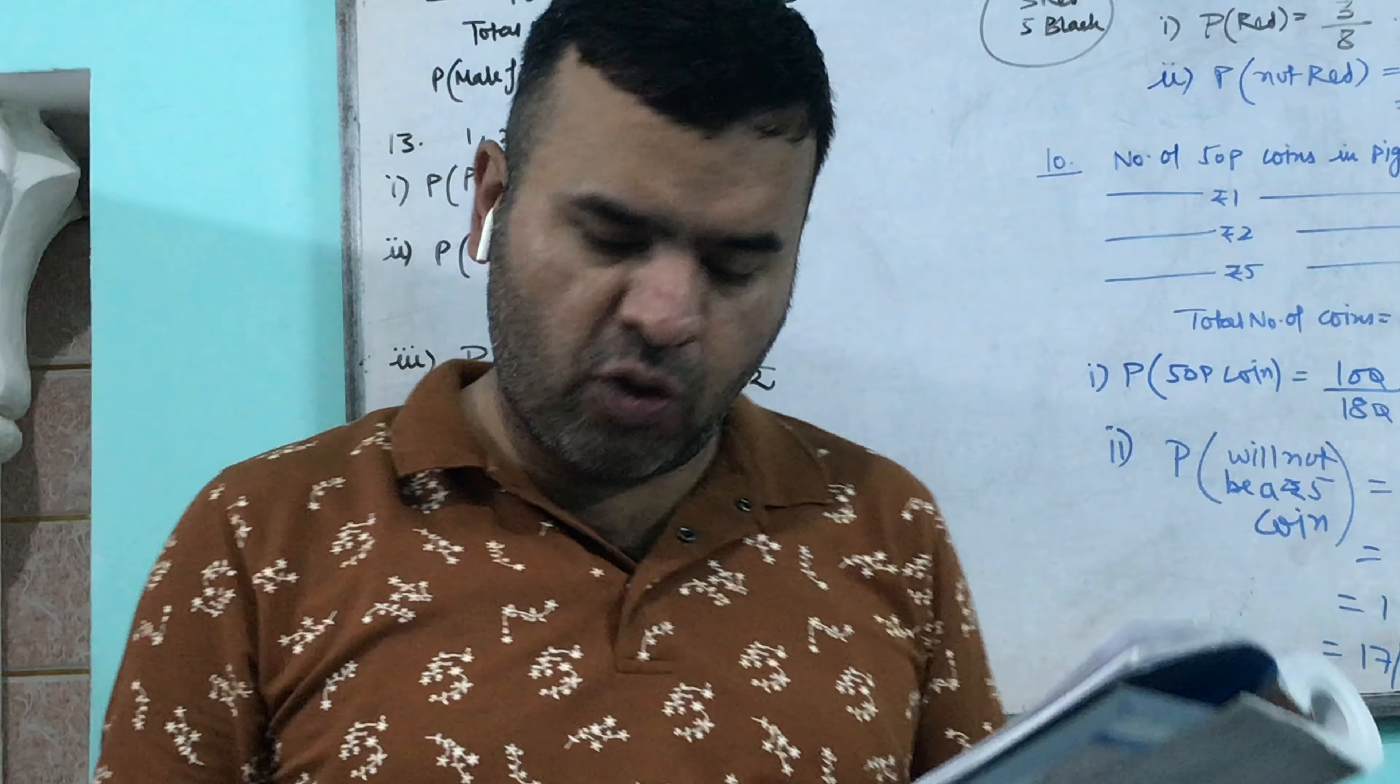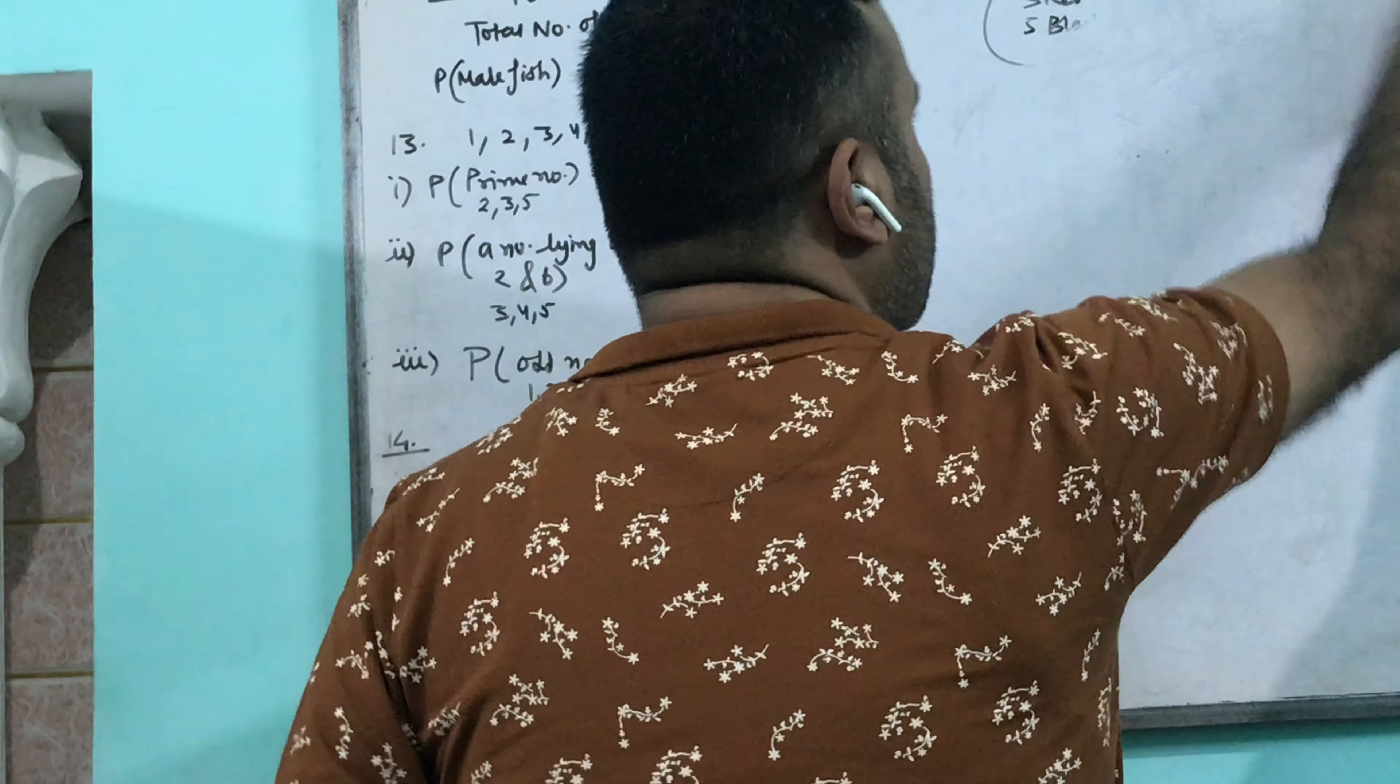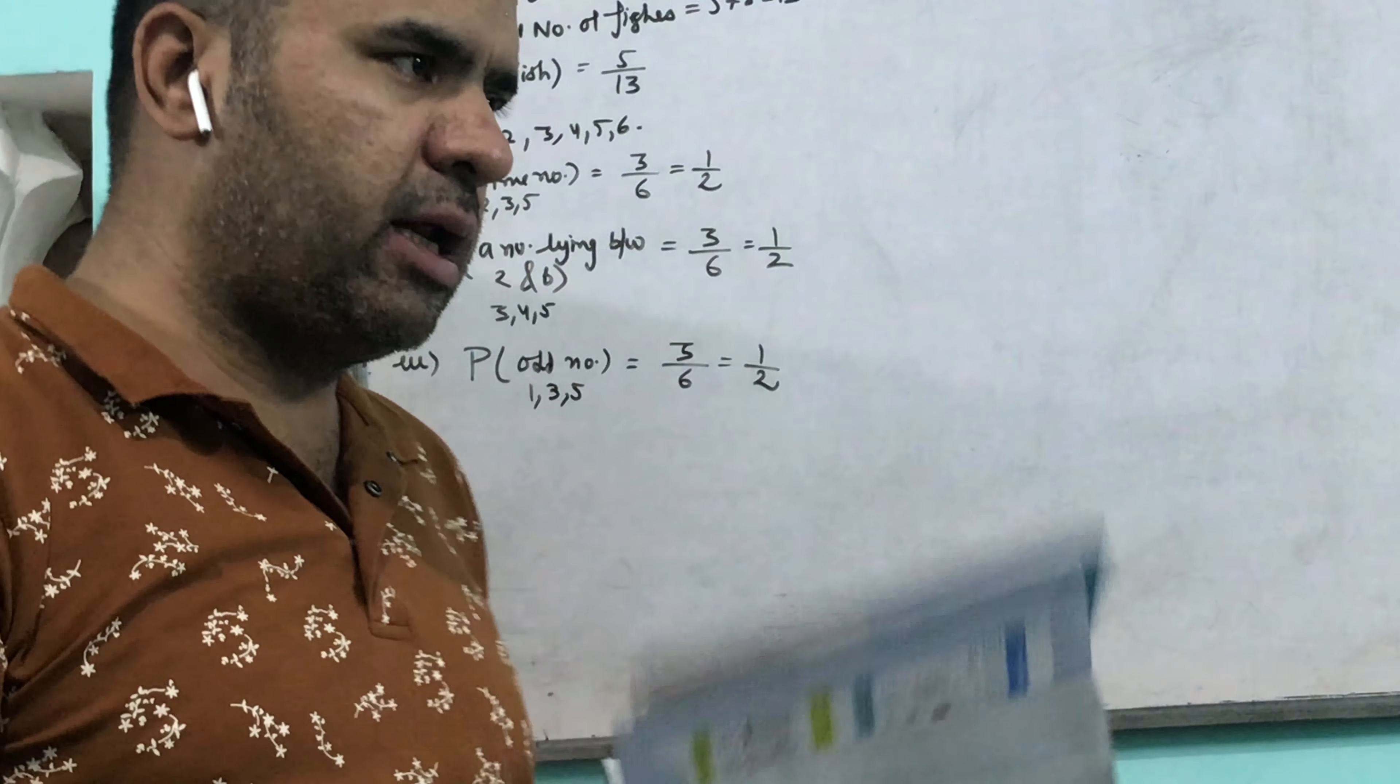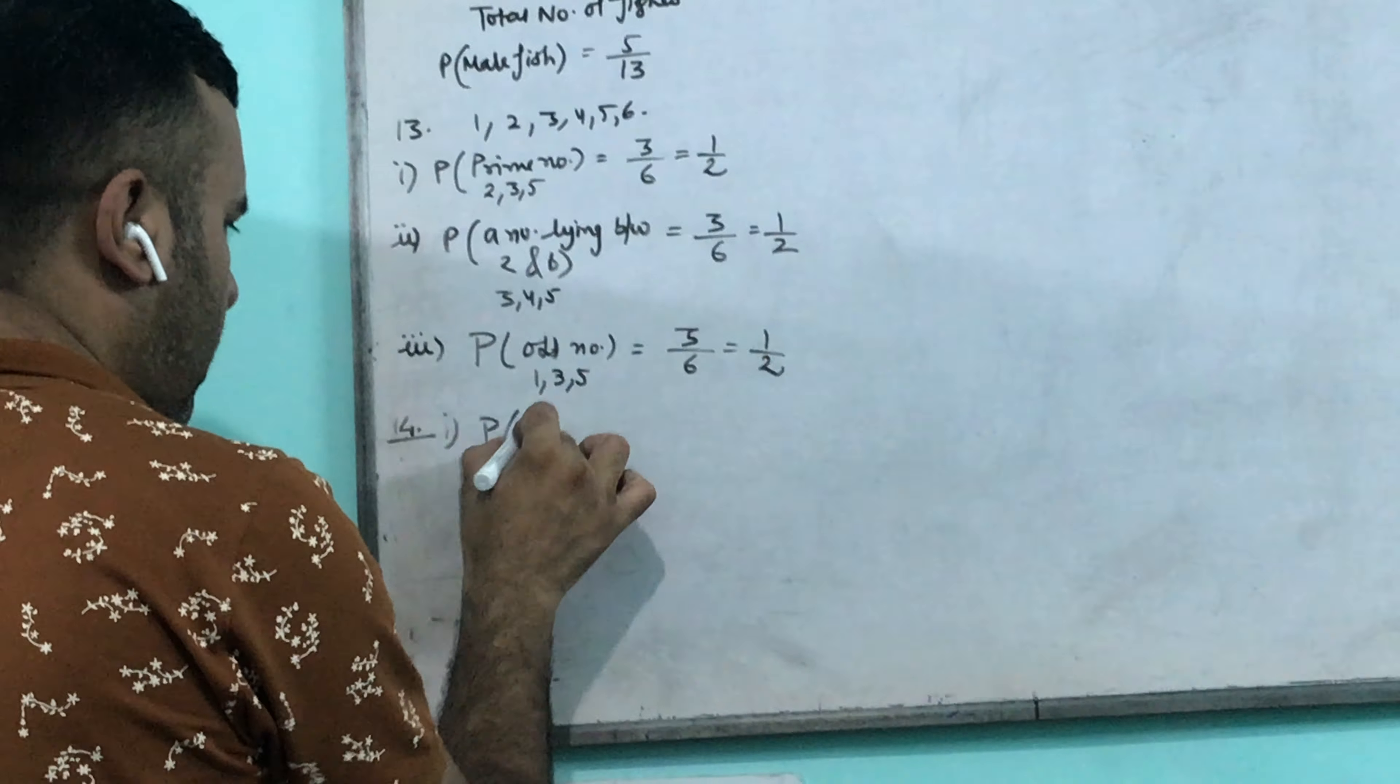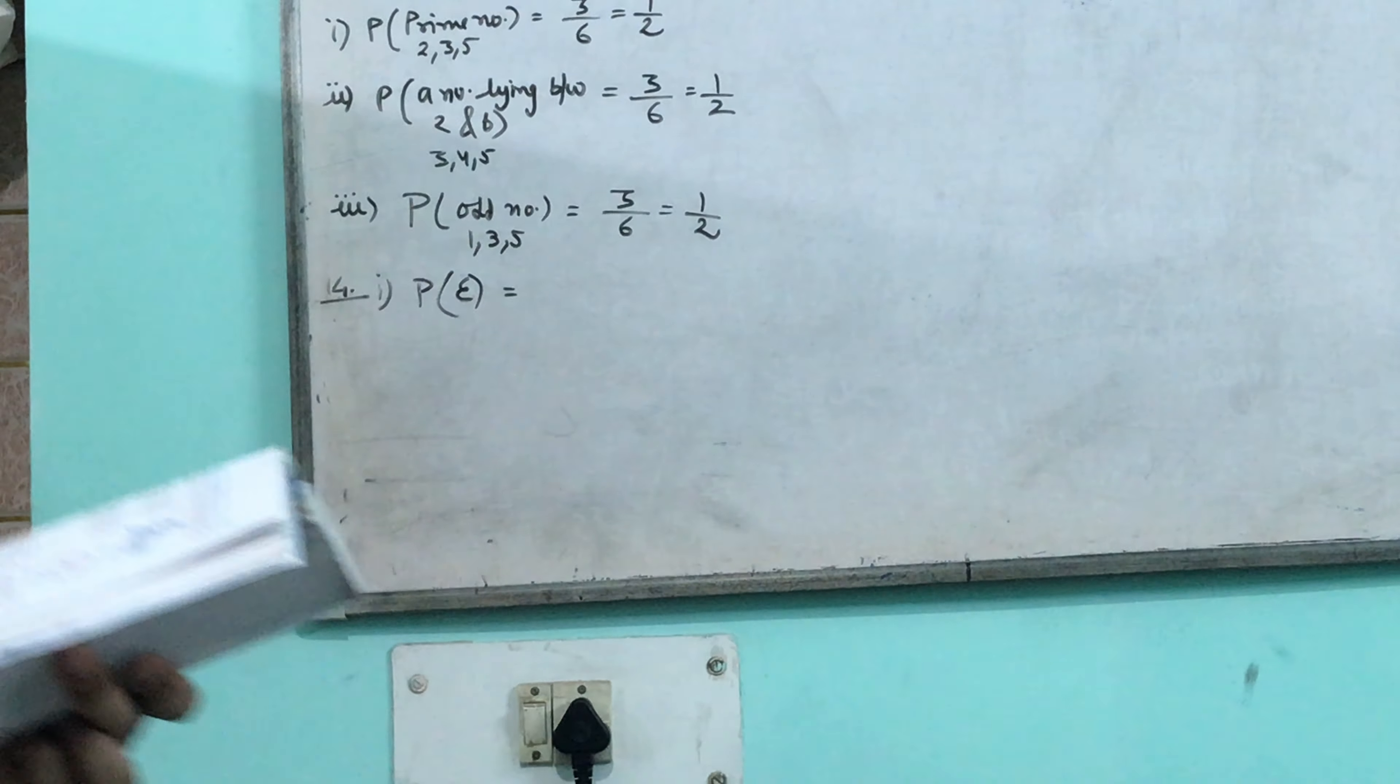One card is drawn from a well-shuffled deck of cards. In the first part, what is the probability of getting a king of red color? I will write the probability of an event for everyone.